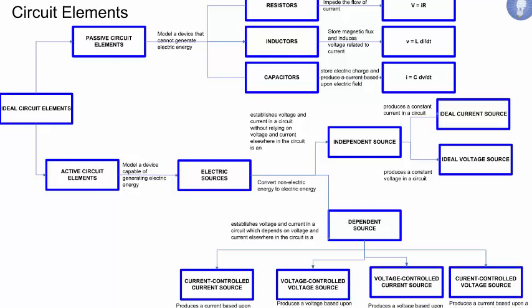For active sources, you can have independent or dependent sources, where independent sources produce a constant current based upon a constant applied voltage. And you can have an ideal current source that produces the constant current, or an ideal voltage source, which produces a constant voltage. Dependent sources, which are represented by a diamond, there are four types. There's a current controlled current source, voltage controlled voltage source, voltage controlled current source, and current controlled voltage source. All of these elements depend upon the voltage or current elsewhere in the circuit. We will talk about this more in detail in the lecture.